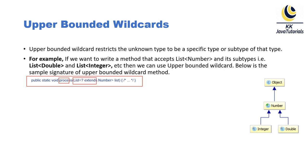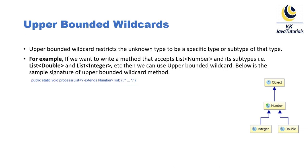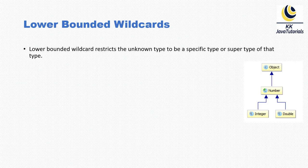Here is the simple signature of an upper bounded wildcard. You can define a method signature like a process method, and pass a parameter in the form of an upper bounded wildcard: List with a question mark extends Number. This method can accept a List of Number and its subtypes — meaning you can pass List of Double, List of Integer, or List of Short — since Double, Integer, and Short are subclasses of Number.